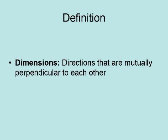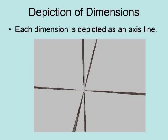Dimensions are a set of directions that are mutually perpendicular to each other. When dimensions are depicted graphically, each dimension is depicted as an axis line. Each line shows the direction of a particular dimension. This graph shows three dimensions.